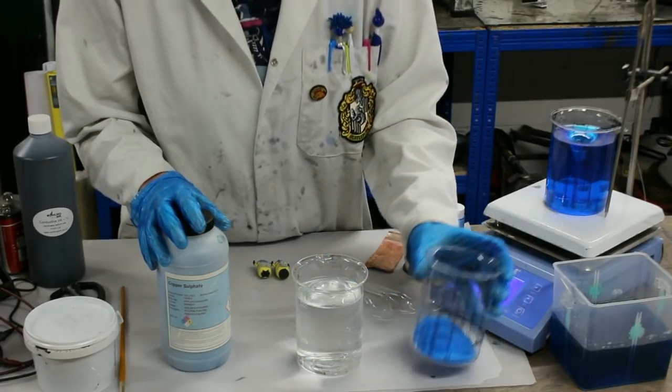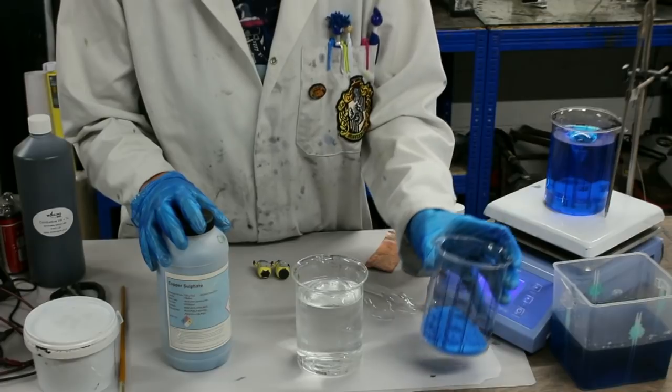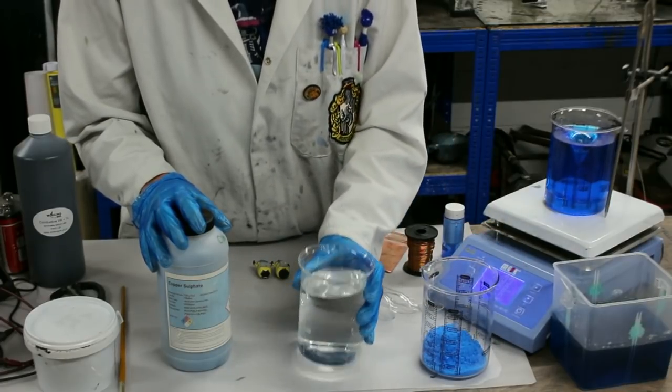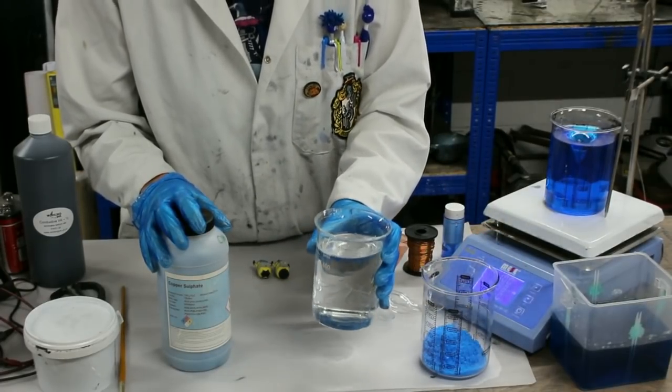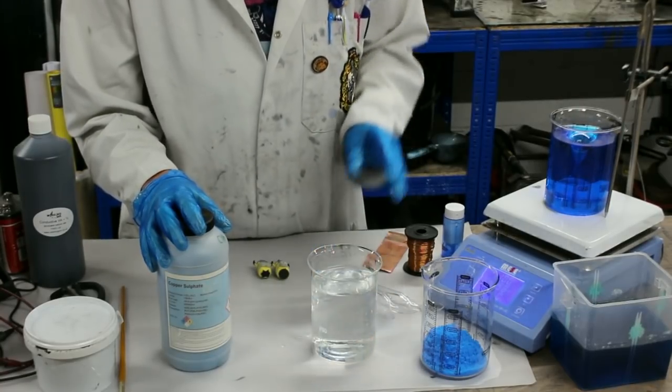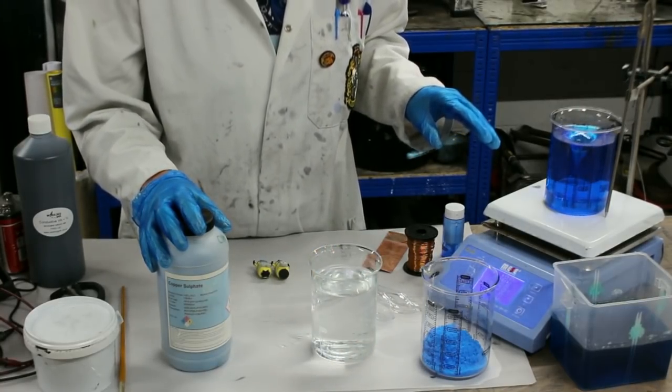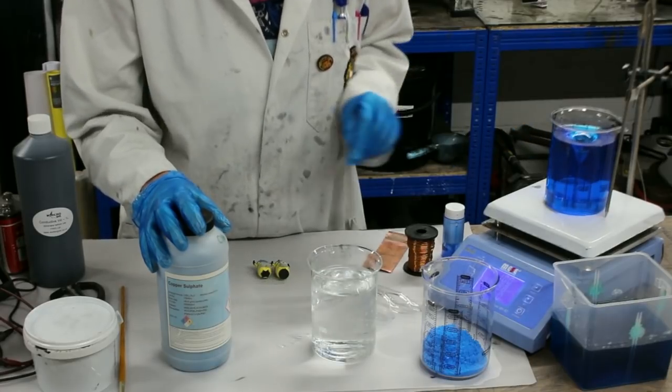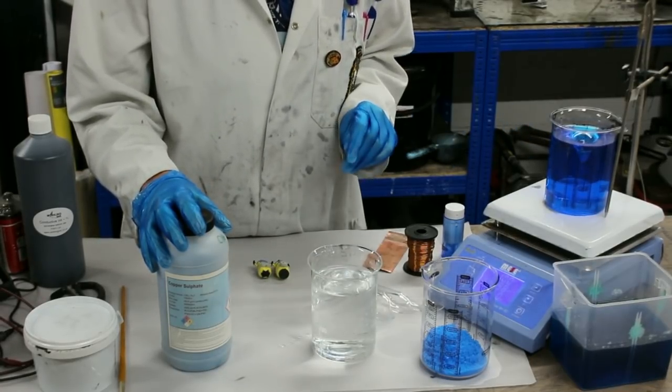Now I've weighed out 125 grams of the copper sulfate and measured out 500 milliliters of deionized water. Now you need to warm up the water. You can put it into a microwave but I've got mine here on the mechanical stirrer which is almost dissolved and it's only been about 5 minutes.